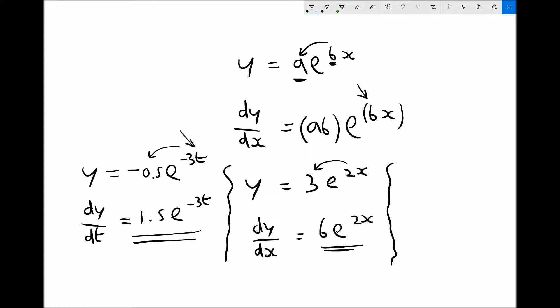And the final example we'll do is y equals 1.2e to the 0.5x. Now once again, the process is very straightforward. All we do is multiply the coefficient of e to the 0.5x, which is 1.2, by the coefficient of x in the power, which is 0.5. So dy by dx equals 0.6e to the 0.5x.